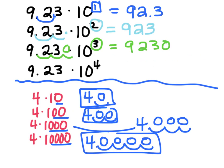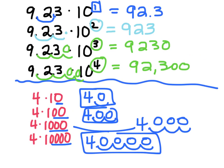And this last one, I can move it over four spots, and I'm going to have to add a couple zeros there, and I get 92,300. So this only works when you're multiplying by powers of 10 — 10 to the first, 10 to the second, third, fourth. It only works for powers of 10. And it also makes sense that these numbers kept getting bigger, because I was multiplying by a bigger number each time.